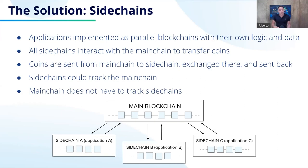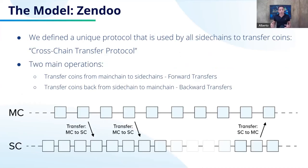Having the main chain track sidechains would not be a wise choice because it would not scale. So we defined a unique protocol used by all sidechains to transfer coins, called the Zendoo cross-chain transfer protocol.